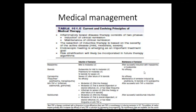Previously, prednisolone was the conventional steroid used but it has significant side effects. Now budesonide is also being used due to a better safety-efficacy profile. For left-sided ulcerative colitis, mild to moderate cases are treated with mesalamine enemas and suppositories as the main treatment along with oral mesalamine. In severe moderate-to-severe left-sided UC, oral plus topical mesalamine is combined with oral steroids on a tapering dose — always on a tapering schedule over six to eight weeks or three months.